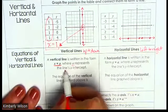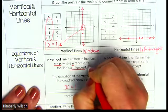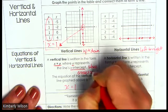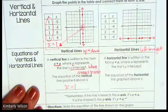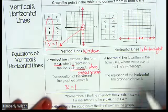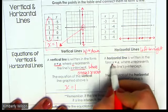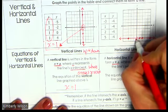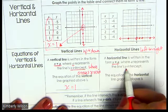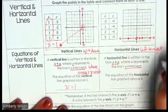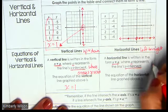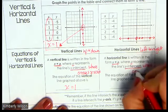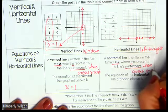Where 'a' represents the line's x-intercept — where it crosses the x-axis. The horizontal line is written in the form y equals a, because that's where it crosses the y-axis. It's the y-intercept; 'a' represents the line's y-intercept, and remember that's where it crosses the y-axis.